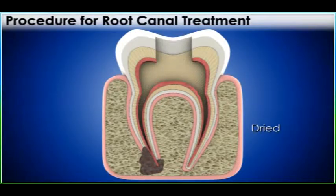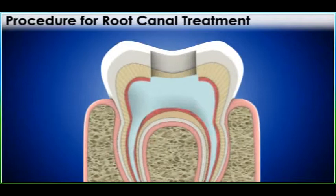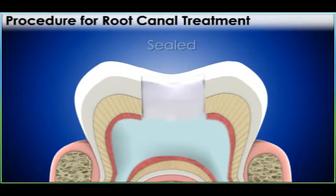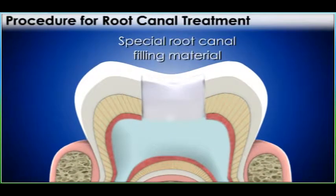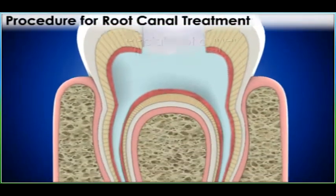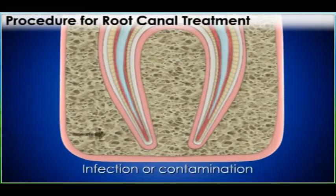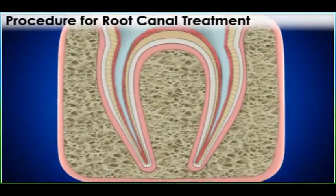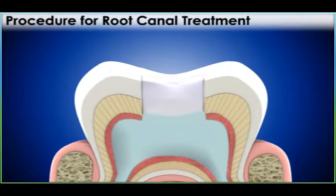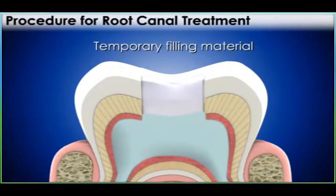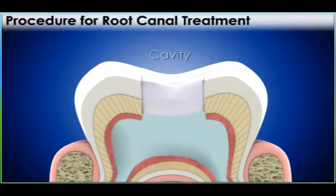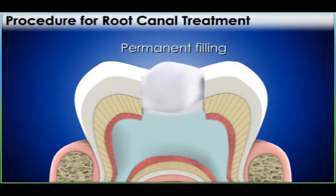The canals are dried, filled, and then sealed with special root canal filling material. This helps to keep the canal free of infection or contamination. A temporary filling material is placed in the access cavity, which is then replaced by permanent filling material after some days.